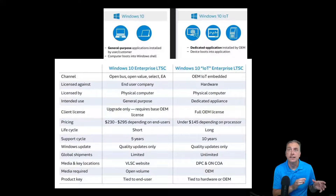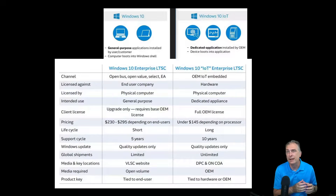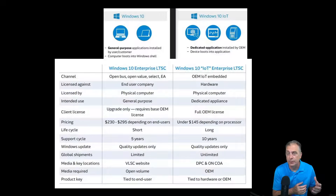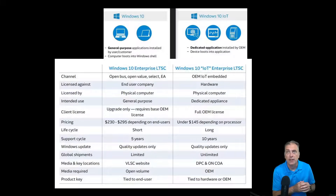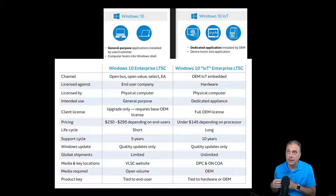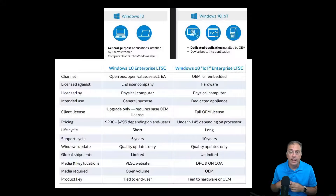The pricing in the open volume channel is $295, depending on the end user. Options include academic for schools, government for federal agencies, and charity — various options that affect pricing. But no matter which you choose, even with a large enterprise agreement, it's still a very expensive upgrade. In comparison, the IoT OEM license is based on the processor of your device, with three price points, and the highest one is still under $145.